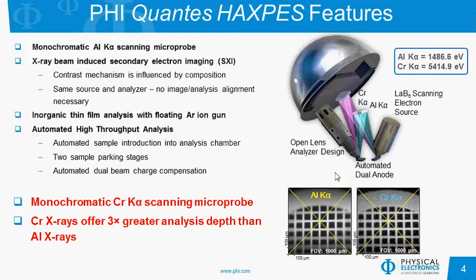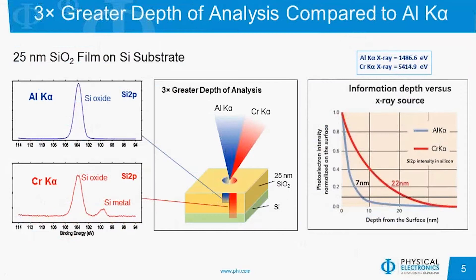Before going into applications, I'll show the gains from using a higher photon energy source. The first is three times greater depth of analysis. This example shows 25 nanometers of SiO2 on a silicon substrate. Using the aluminum K-alpha source, we can only see the silicon oxide. However, by using the chromium K-alpha source, we can see much deeper into the sample and see both the silicon oxide and the silicon metal without having to sputter. With a sample this thick using the aluminum K-alpha, one would have to sputter in order to see the underlying silicon substrate.